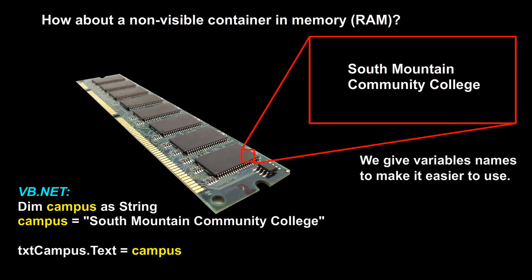If I later want to retrieve that value, I can simply refer to it by the variable name. So the next line, txtcampus.text equals campus — if that statement was executed, it would place the phrase South Mountain Community College in the text box named txtcampus as the text property.